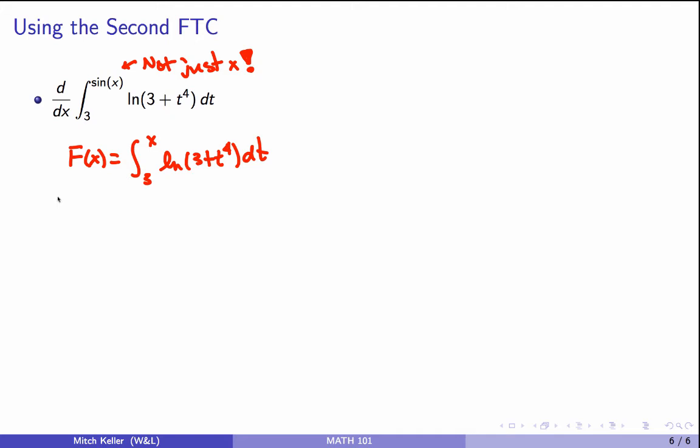The second FTC tells us that the derivative of this function, big F, is the natural log of 3 plus x to the fourth. So this is really saying I'm looking for the derivative with respect to x of F of sine of x. I'm taking big F and I'm putting sine in, and that gives me exactly that. That's going to be a chain rule.